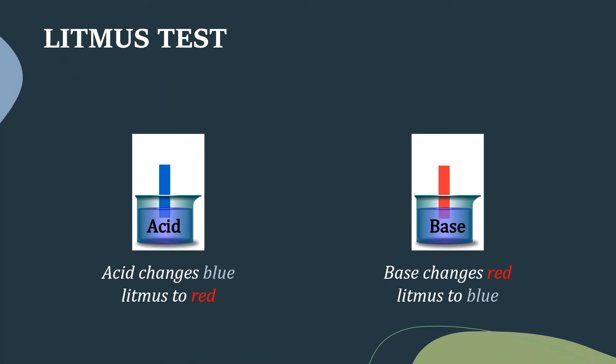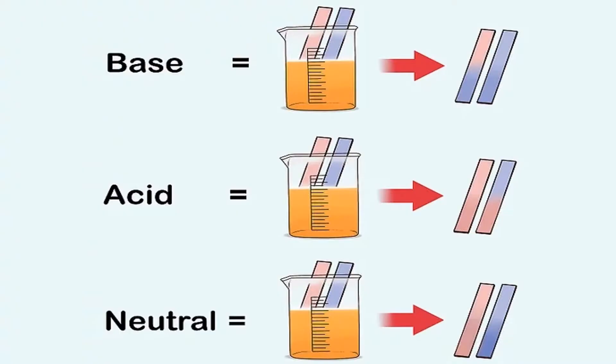Now let's look at a litmus test. Acid changes blue litmus to red; base changes red litmus to blue. When we insert both red and blue litmus in a basic solution, the red litmus changes to blue and the blue litmus does not show any change. Similarly, in acidic solution, the blue litmus changes to red and the red litmus does not show any change. In neutral solutions, both red and blue litmus do not show any change.